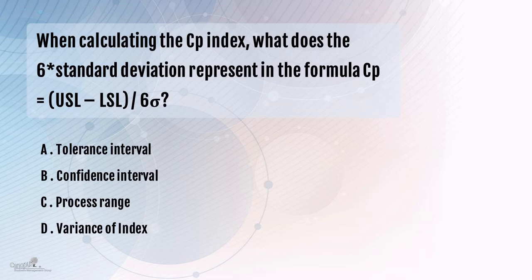Confidence level is irrelevant in this context. D, which is variance of the index, it is not absolutely the variance of the index. If you had talked about variation of the process, possibly D could have been the answer. Certainly in this case, the answer is C.